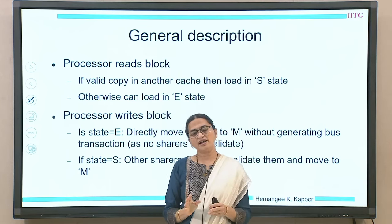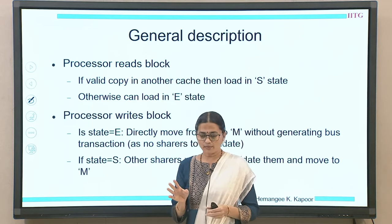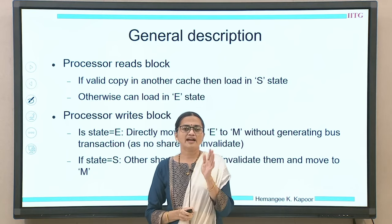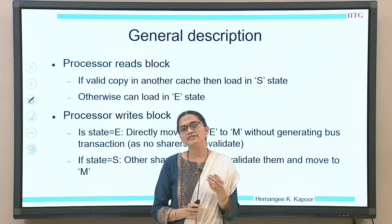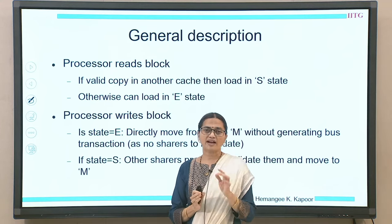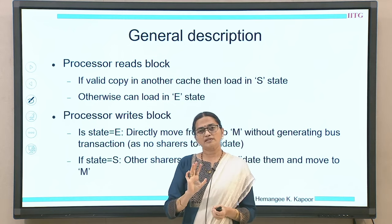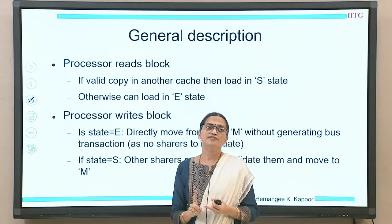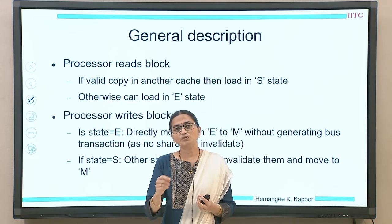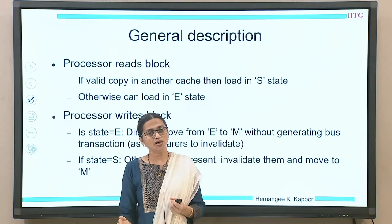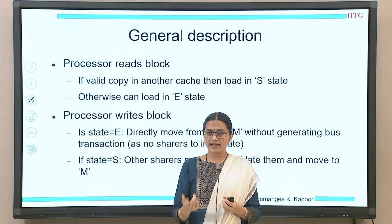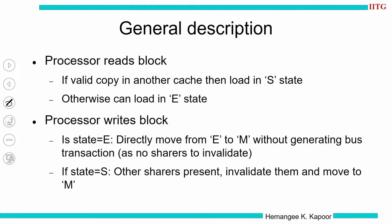Processor reads a block: if a valid copy is present, we get a cache hit. On a cache miss, we go onto the bus to find out whether we can load the block in state S (shared) or E (exclusive) — an S-or-E decision is made. If the processor writes to the data block and the state is E, the processor can simply write without informing others, but we change E to M first. If the state is S, we must invalidate others, move to M, then start writing.